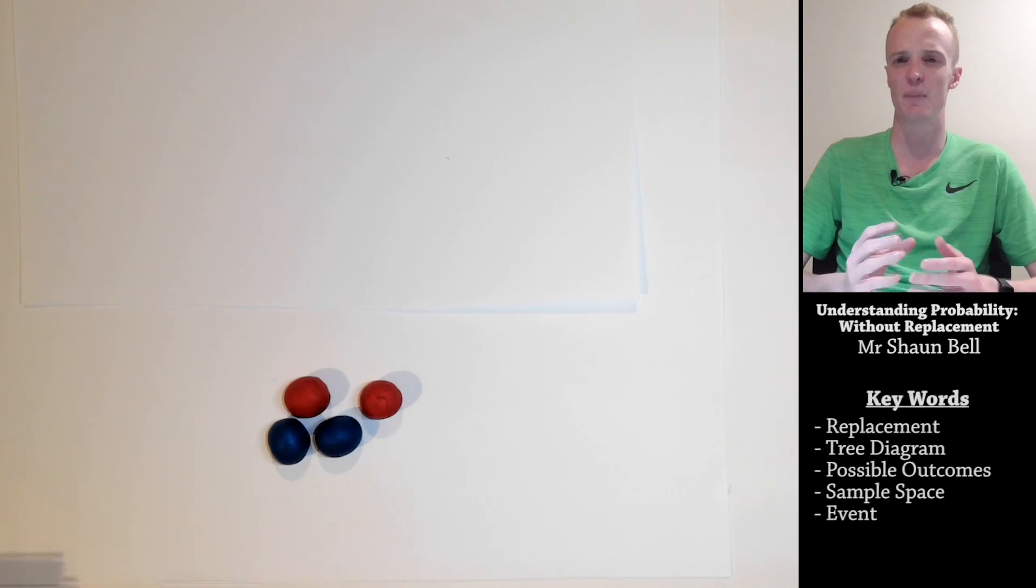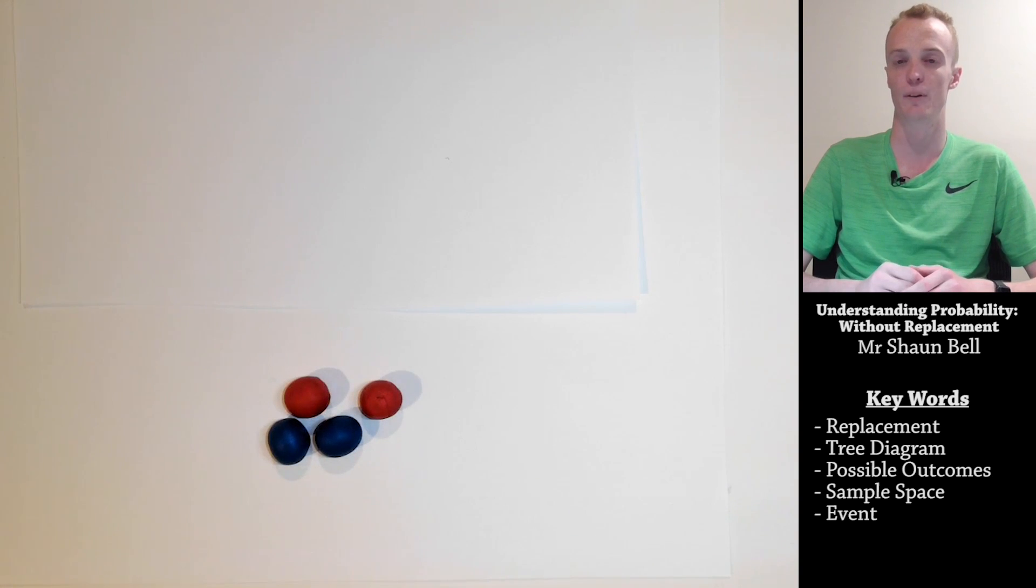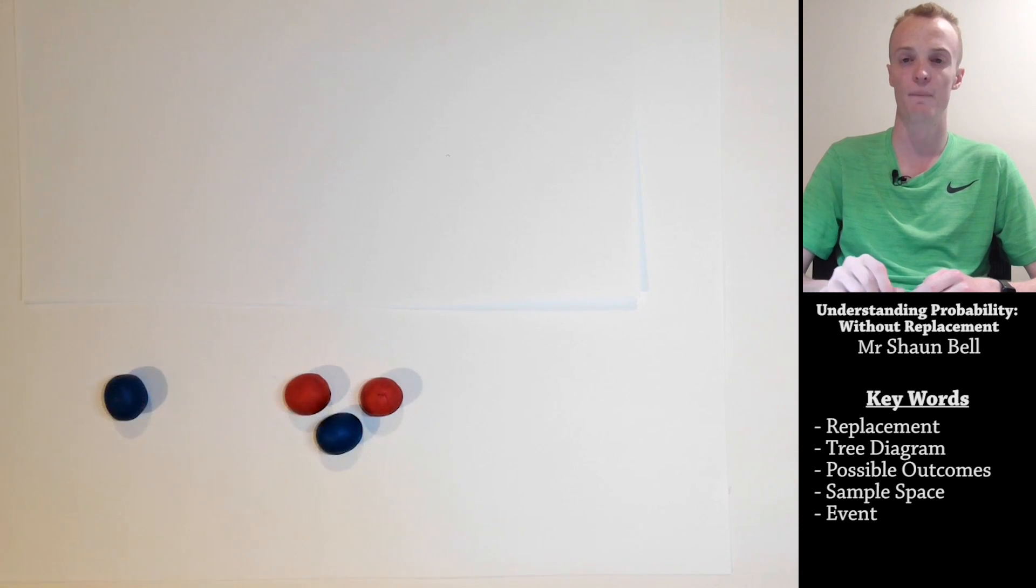Now to begin, we need to separate what probability is with replacement and without replacement. So, in front of me I've got four coloured balls here, two red and two blue. If I were to select one of these first at random, let's say that I selected the blue ball here, this could be considered my first event.